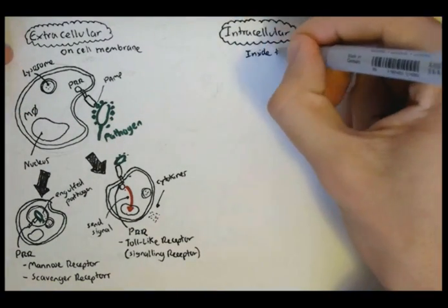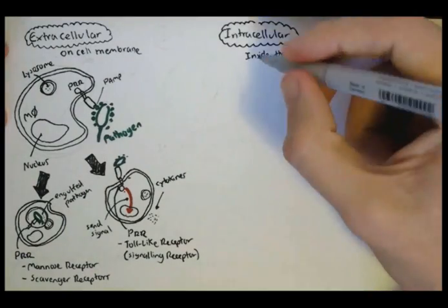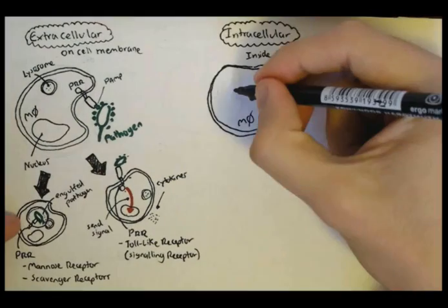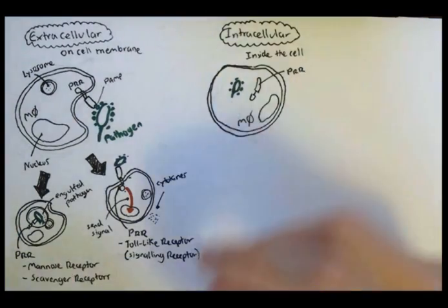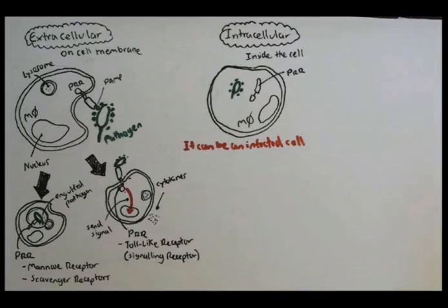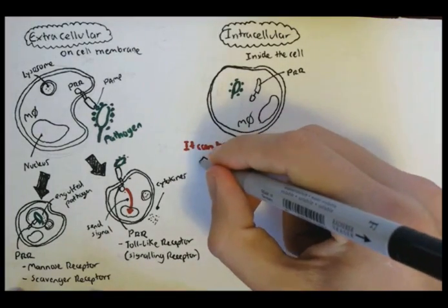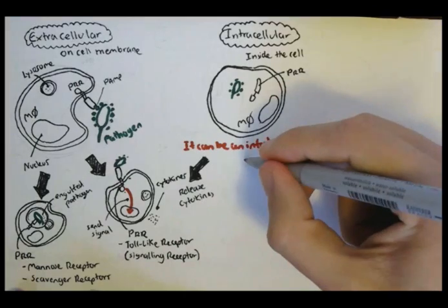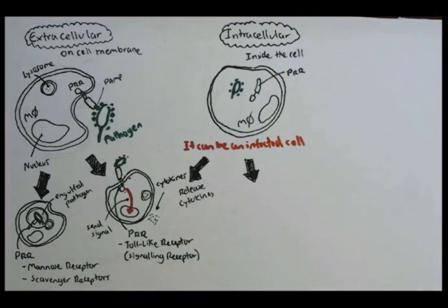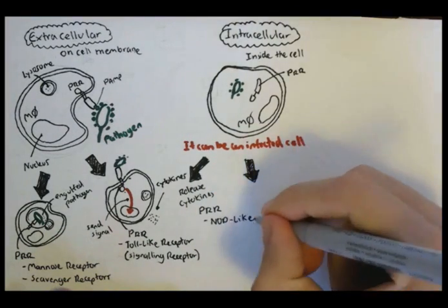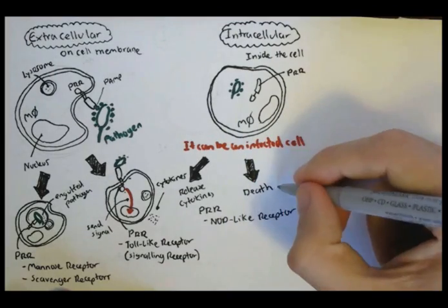Next, we have the intracellular PRRs, which are inside the cell. Here again we have a macrophage with its PRR and pathogen. Since the pathogen is inside the cell, the cell can be infected. These intracellular receptors can cause the cell to release cytokines or other various chemokines, or if the cell is infected, it can die. These intracellular receptors are mainly known as the NOD-like receptors, though there are others.